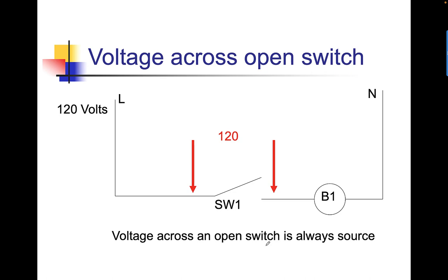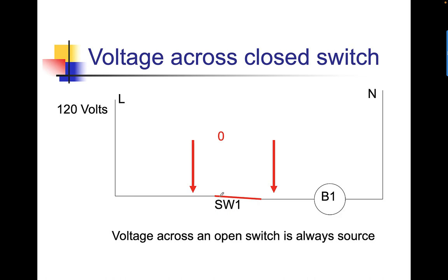In this case, I have two meter leads across the open switch. The meter is actually in parallel — my meter is here, next to the switch labeled SW1 because it's in parallel. Voltage across an open switch is always source. L1 and neutral, 120 volt source, and I'm measuring 120 volts. If I close that switch, the voltage across a closed switch is always zero. We've closed the switch and we now have zero volts because it's closed.